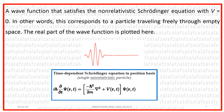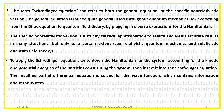We are considering non-relativistic cases where the subatomic particle is not moving at speeds comparable to the speed of light, but at smaller speeds. There is another version called relativistic quantum mechanics for particles moving at the speed of light. To apply the Schrödinger equation, write the Hamiltonian — finding the kinetic and potential energy — insert it into the equation, and solve the resulting partial differential equation to get the wave function containing information about the system.